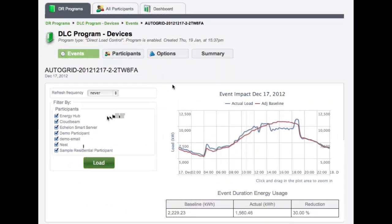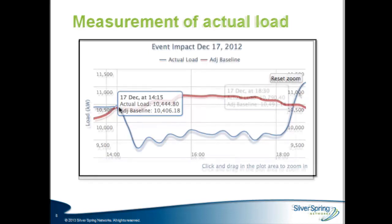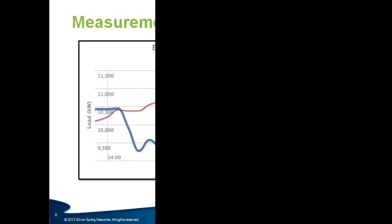Utility IQ Demand Optimizer also greatly improves measurement and verification of actual demand reduction, providing near real-time measurement and verification as quickly as the smart grid network collects meter data. The software starts building M&V graphs as the event is in progress, allowing operators to make adjustments to the events on the fly.